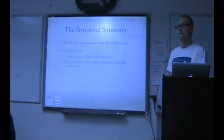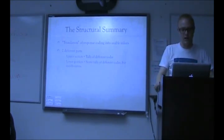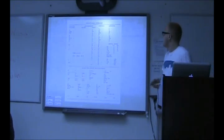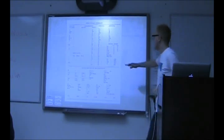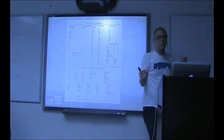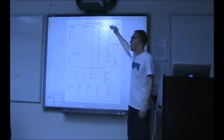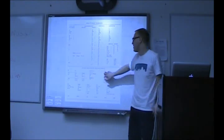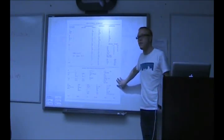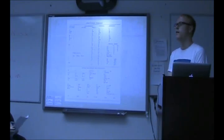Now we're done with coding and we're going into the structural summary and interpretation. The structural summary is a translation of all of the responses into the coded variables, and there are two parts. The upper section is just a tally of the different codes, and the lower portion is ratios. The upper part is where you just count up the number of blank, number of FM, number of small m. And then the lower part is really the meaty part of the interpretation — you calculate ratios, percentages, and derivations, and this is what you'll use to interpret.